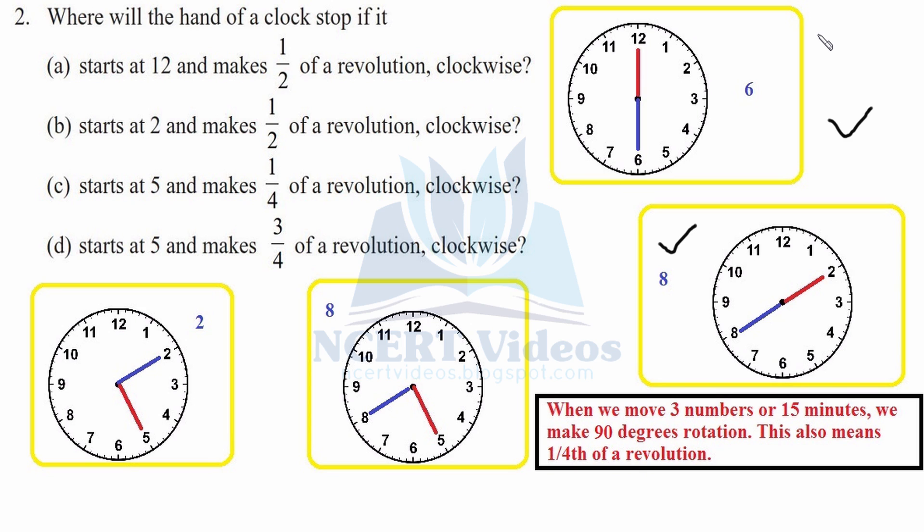For part d: starts at 5 and makes three-fourths of a revolution. From 5: 6, 7, 8 is 15 minutes — one-fourth rotation; then 9, 10, 11 — another one-fourth rotation; then 12, 1, 2 — another one-fourth rotation. Three of these make three-fourths of a revolution, so it stops at 2. That completes question number 2.